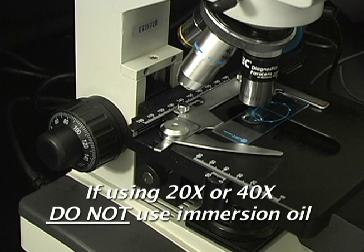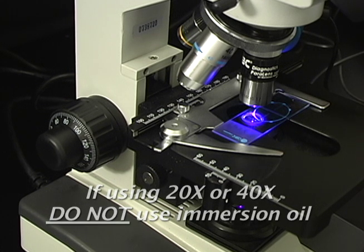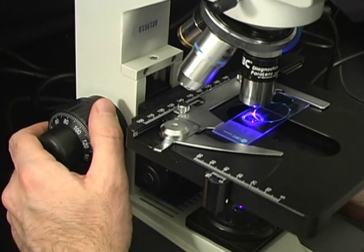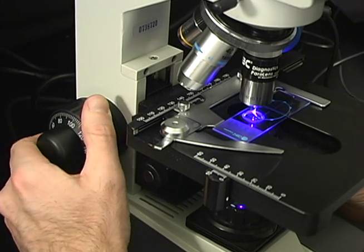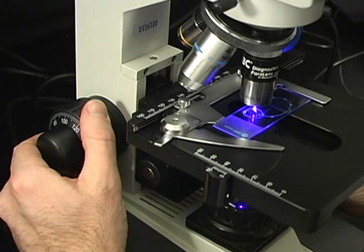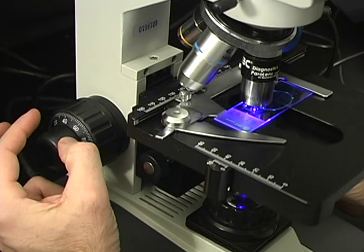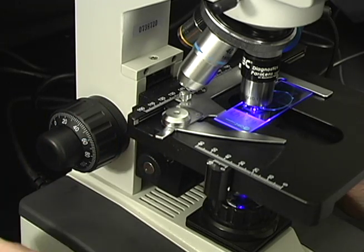If using the 20x or 40x objective, do not use immersion oil. Bring the objective down towards the slide with the coarse focus knob until the fluorescent marker comes into view. Then, fine-tune the slide into focus with the fine focusing knob.